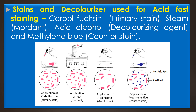The stains and decolorizer used for the acid-fast staining: the primary stain is carbolfuchsin, the mordant is steam, and the decolorizing agent is acid-alcohol. Acid-alcohol is prepared by adding 3% hydrochloric acid and 95% ethanol. The counter stain is methylene blue. In summary, acid-fast bacilli resist decolorization due to the presence of mycolic acid in the cell wall and appear red in color due to the carbolfuchsin, while non-acid-fast bacilli undergo decolorization, take up the counter stain methylene blue, and appear blue in color.